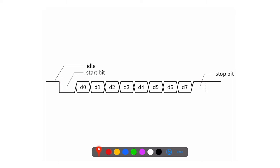A bit is the length of time you keep the line at a very specific value. The start bit, from here to here, is kept at zero for a very specific period of time — it's always zero. So the idle state is one, and the start bit is zero.